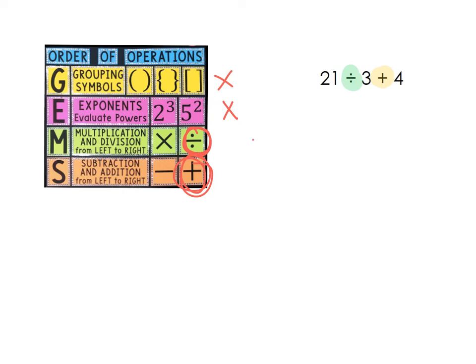Alright, same order. Division first, then addition. 21 divided by 3 is 7. I bring down the rest of the problem, plus 4. 7 plus 4 is 11, which gives me my final answer for this problem.